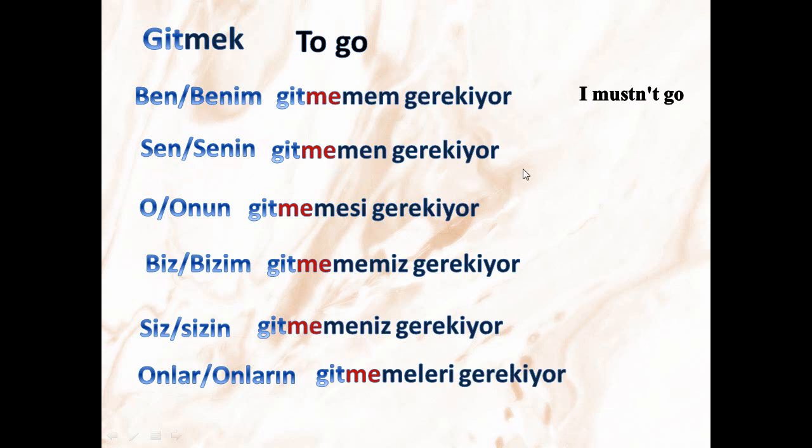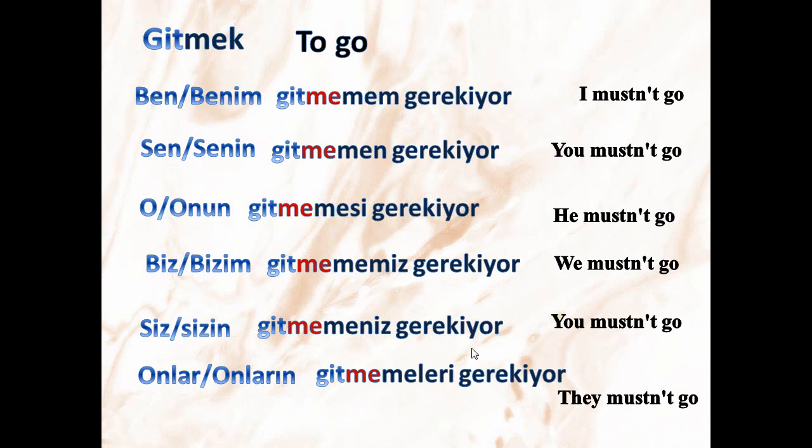Let's go to another word: 'gitmek', which means 'to go'. We omit the infinitive suffix and put it in the formula. Ben/benim gitmemem gerekiyor — I mustn't go. Sen/senin gitmemem gerekiyor — you mustn't go. O/onun gitmemesi gerekiyor — he mustn't go. Biz/bizim gitmememiz gerekiyor — we mustn't go. Siz/sizin gitmemeniz gerekiyor — you mustn't go. Onlar/onların gitmemeleri gerekiyor — they mustn't go.